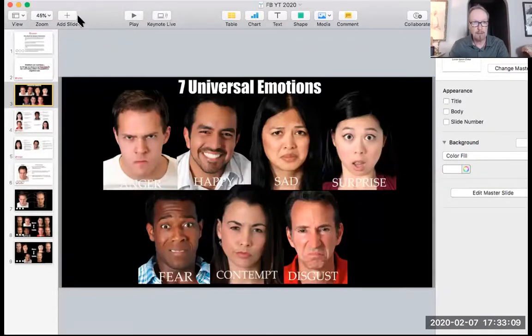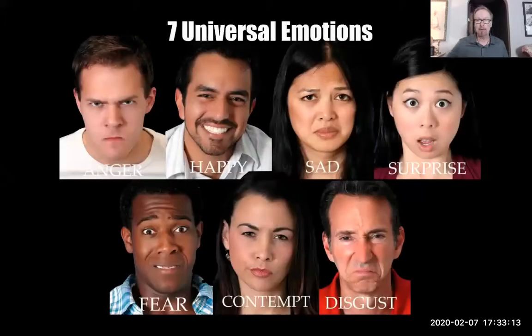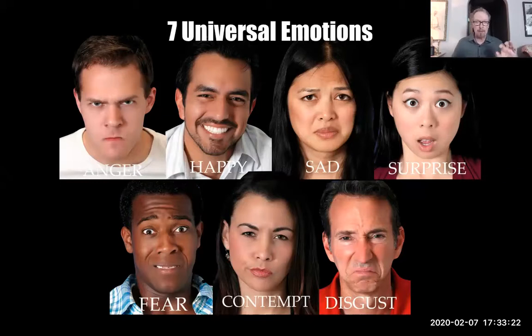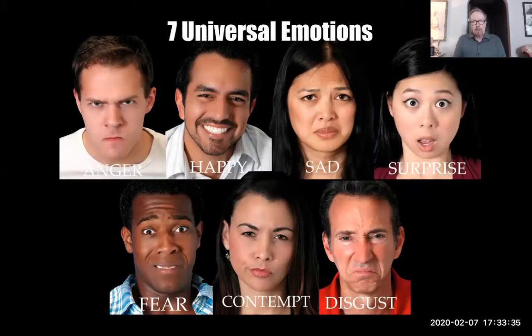What we're going to look at today is the seven universal emotions. I'll tell you a little bit about what makes them universal and show you the three ways we express them: micro, macro, and subtle. I'll try to do this in about five to seven minutes. One reason I wanted to go live was to be able to show you my screen, which is a bit harder to do on Facebook live.